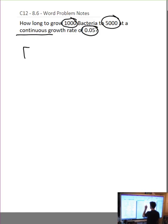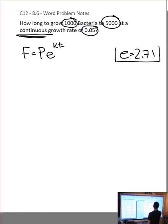How long to grow 1,000 bacteria to 5,000 at a continuous growth rate of 0.05? So, as we saw in the last chapter, we have all sorts of exponential formulas that we're going to be using. But specifically, if we see the word continuous, we have to use the formula with E. E is the continuous growth rate, 2.71. Euler's number, look it up.